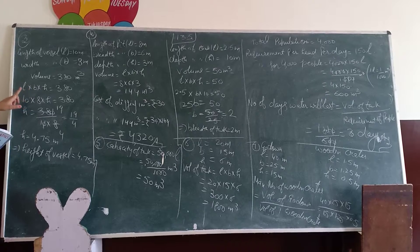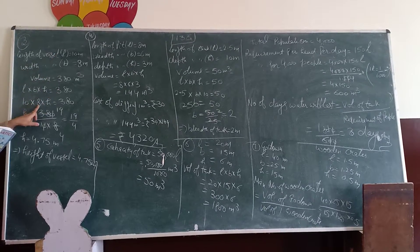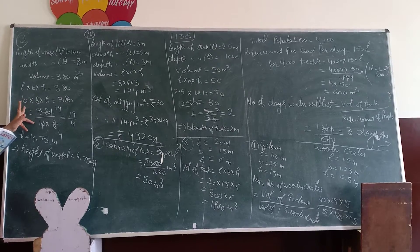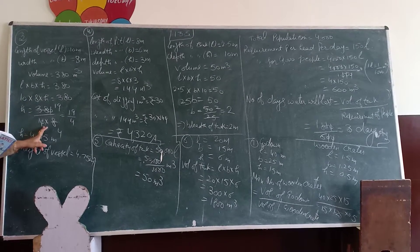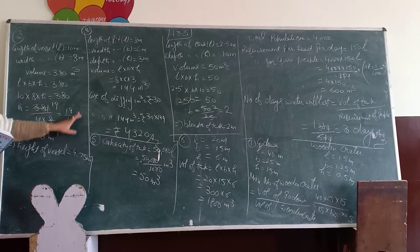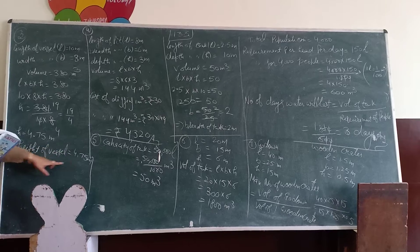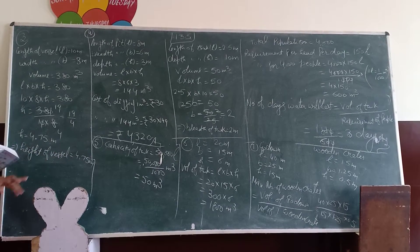The volume of the vessel divided by 2.0, zero cancels. 19 by 4, this is 4.75. The height of the vessel is 4.75 meters.